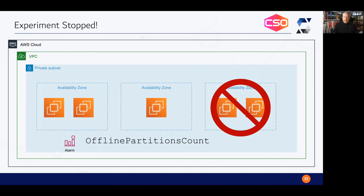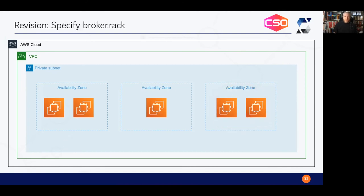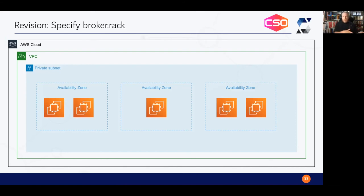We go and look and try to understand what happened. It turns out we haven't specified the broker.rack configuration parameter. This is a config where you define which nodes are in the same rack — the idea being that in most failure scenarios, all nodes in the same rack will be unavailable together. If we extrapolate that to say availability zones are racks, we can have two nodes in the 2A availability zone, one in 2B, and two in 2C. We use the same experiment template as before, the same stop conditions, and our hypothesis remains that we can withstand the failure of two nodes.